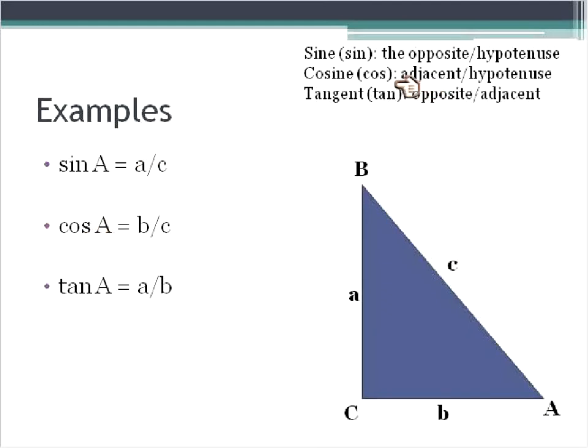The cosine of A, remember cosine is adjacent over hypotenuse. So we would take this adjacent line of b, put it over the hypotenuse of c, and that would be the cosine of A. And then the tangent of A is the opposite, or lowercase a, over the adjacent, lowercase b.